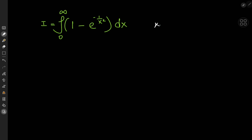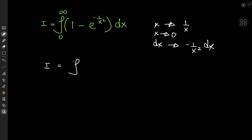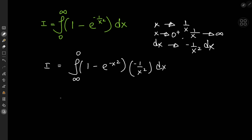It starts off with a transformation from the x realm to the 1/x realm, and that of course takes dx to the negative 1/x² dx realm. As x approaches 0 from the right, 1/x approaches infinity, and as x approaches infinity, 1/x approaches 0. We have 1/e^(−x²) giving us the familiar Gaussian term, and dx transforms into negative 1/x² dx. We can get rid of the negative sign by switching the limits.